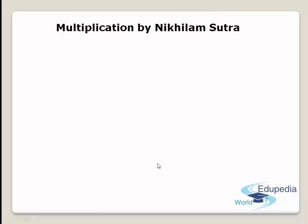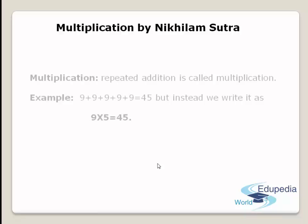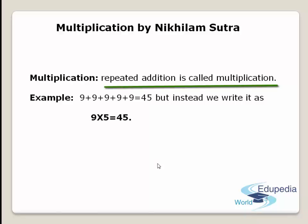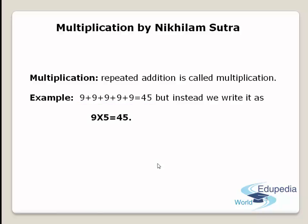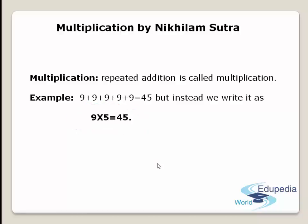Before going to start the session, let us know some basic terms. The first basic term is multiplication. Multiplication means repeated addition of a number. So if a number is added repeatedly, then it is said to be multiplication. For example, if I take the number 9 and add it 5 times — 9+9+9+9+9 — you will get 45. Instead, we just write 9 × 5 = 45. You can see this in the table of 5.